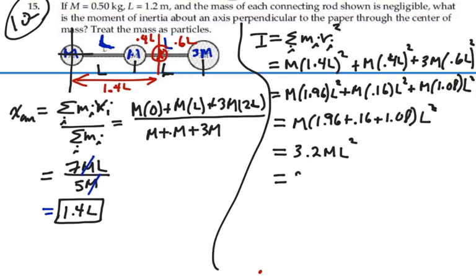We actually know what m is, we are given that value, it is 0.5 kilograms, and we actually know what l is, it's 1.2 meters. So this is what...